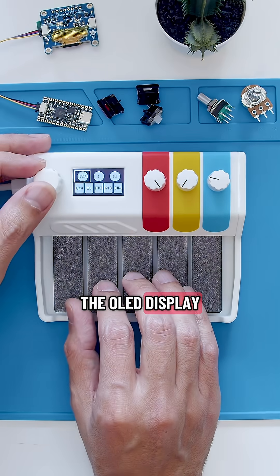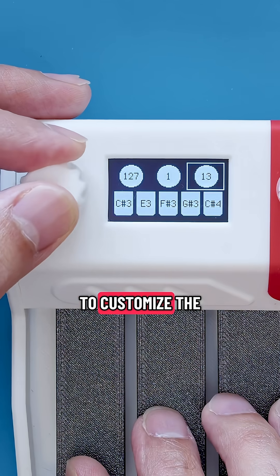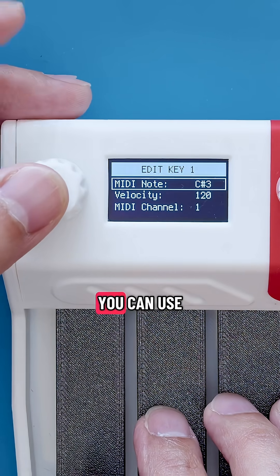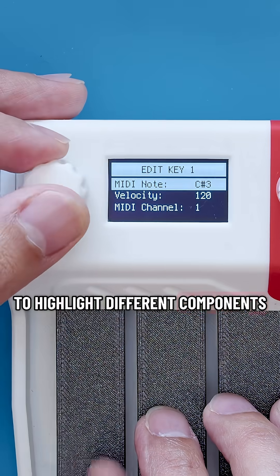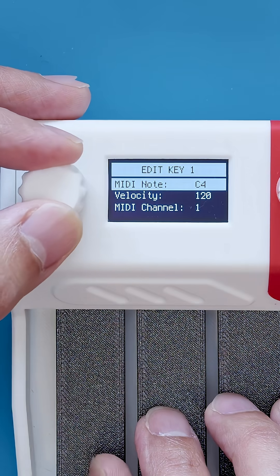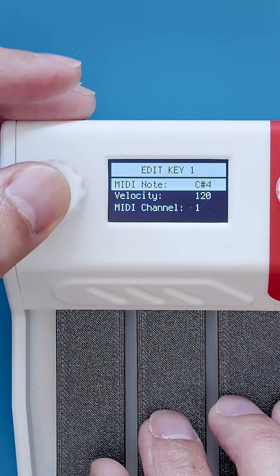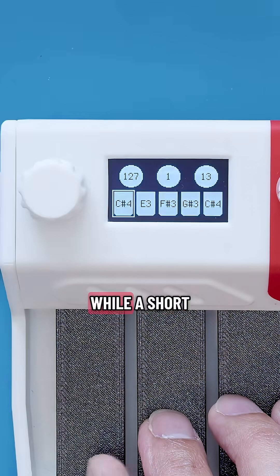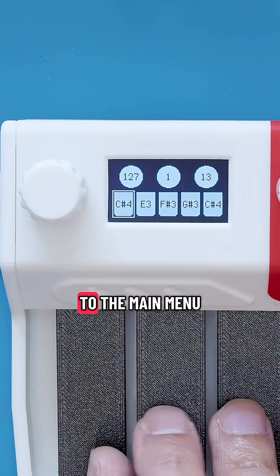The OLED display features a GUI that allows you to customize the MIDI parameters. You can use the rotary encoder to highlight different components and even change assigned MIDI notes on the fly. A long press will go into edit mode, while a short press lets you save and exit to the main menu.